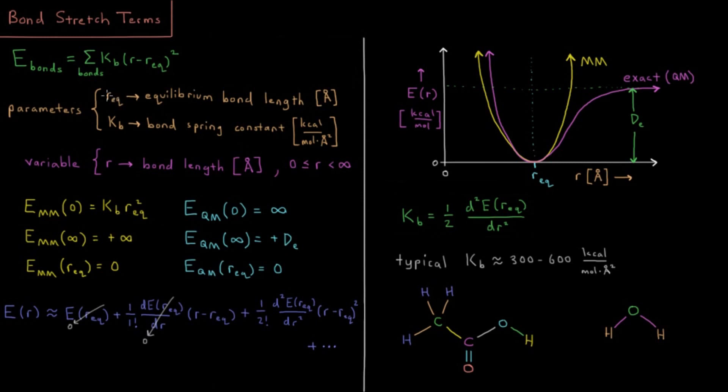Typical value for equilibrium bond lengths will be what bond lengths typically are, something between 1 to 1.5 angstroms in many cases.